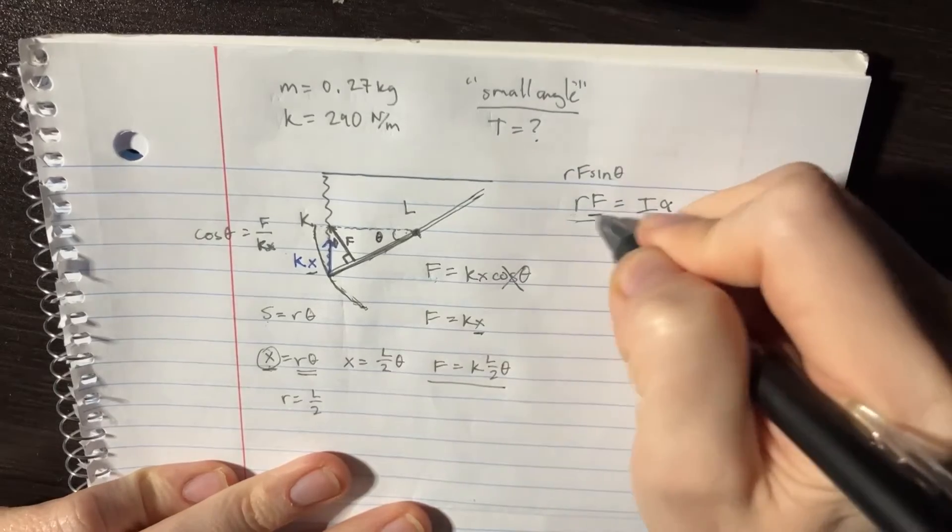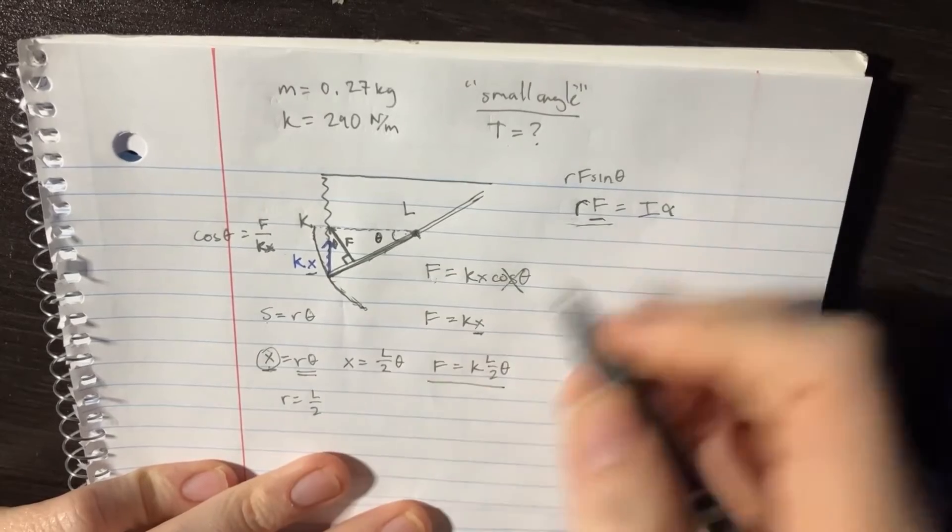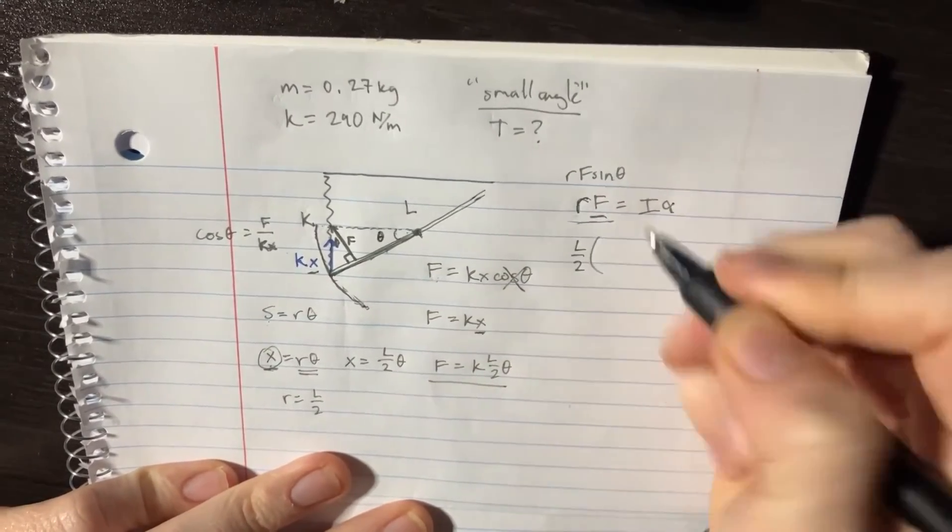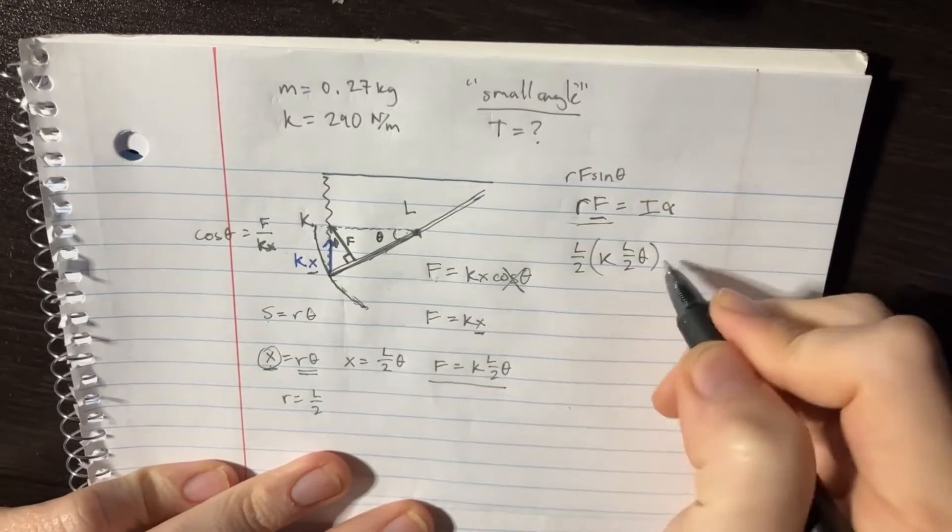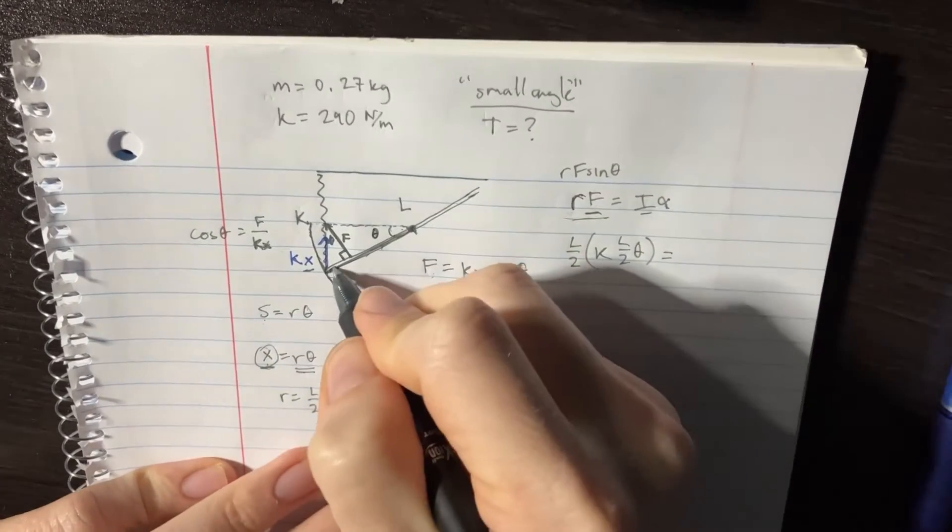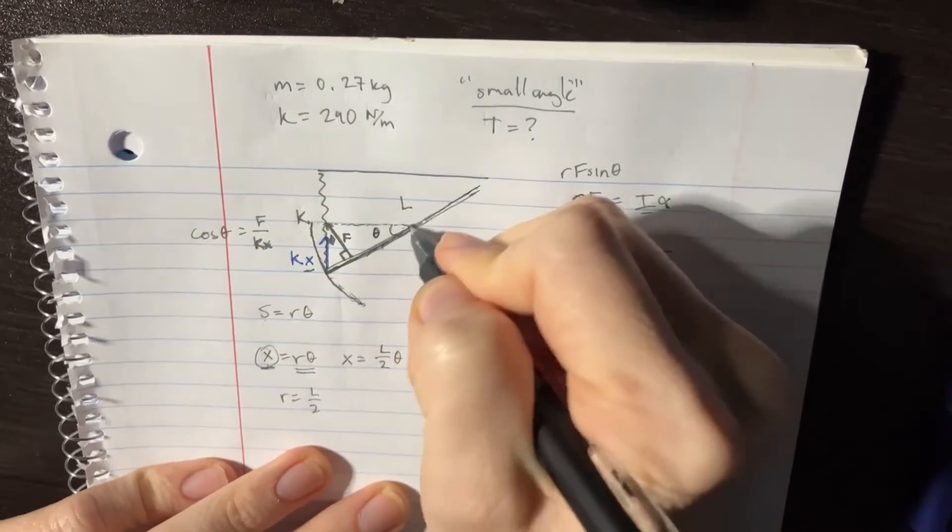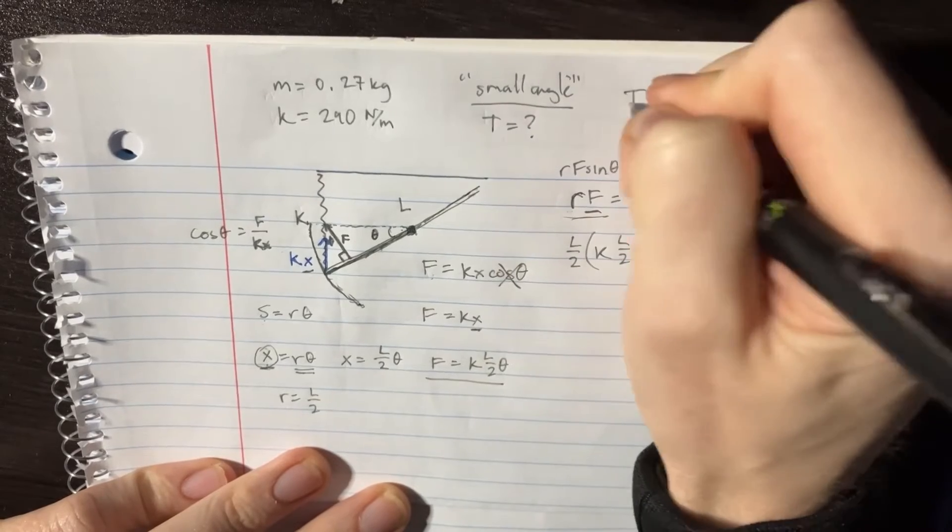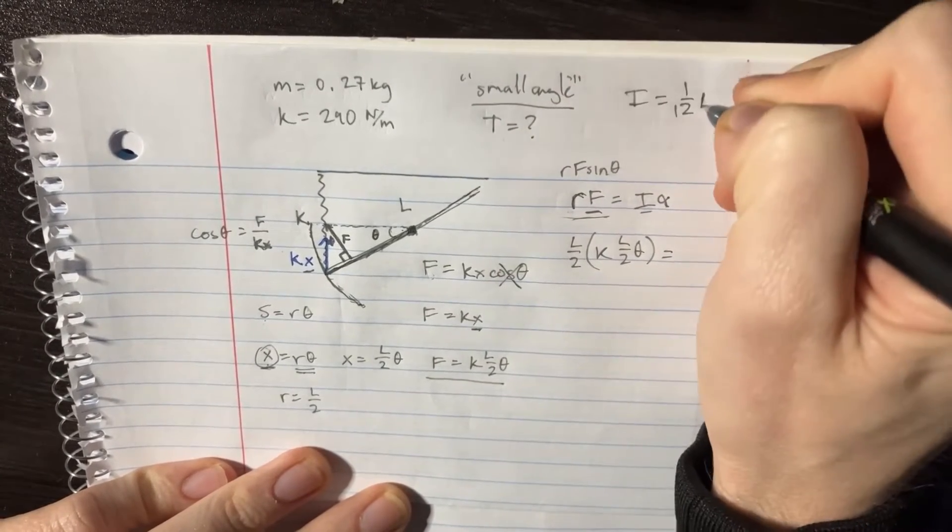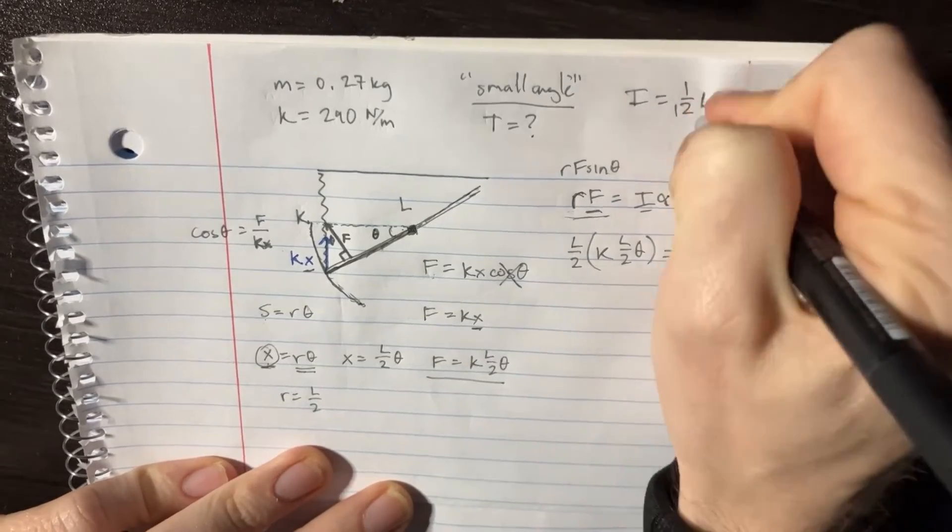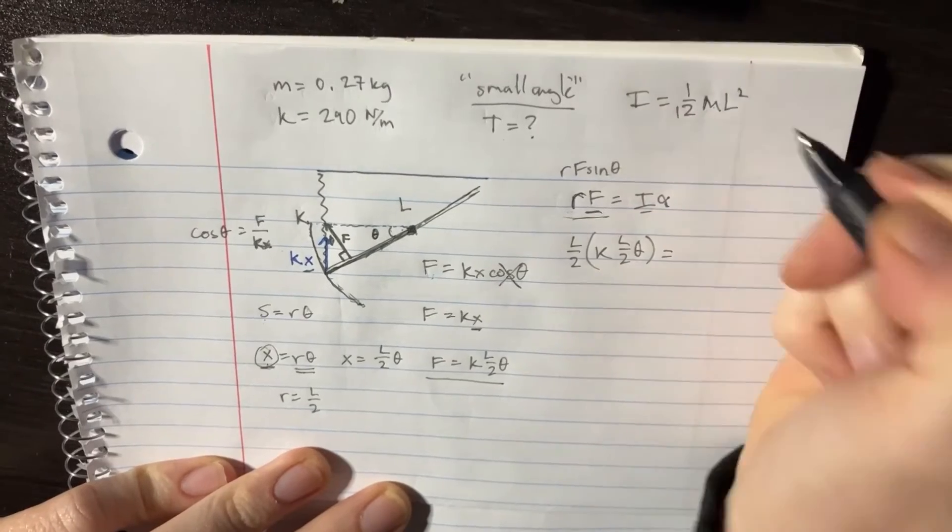Now this is what we're going to want to put in right there for F. And R again was L over 2, so we have L over 2 and then K L over 2 theta. We're making progress! That's going to be equal to I. What is I of this? Well remember that if you have an axis right here and you have a rod, then the I is actually just equal to 1/12 M L squared. So this is M L squared here.